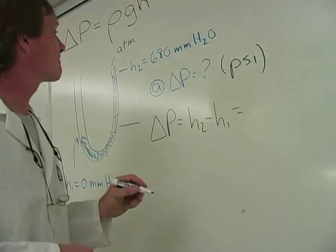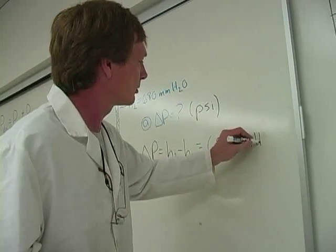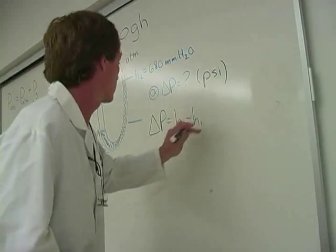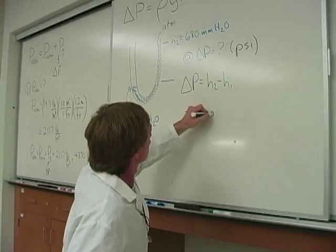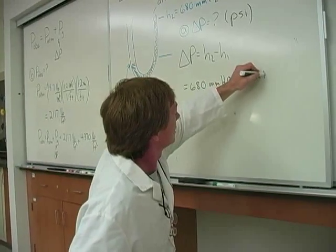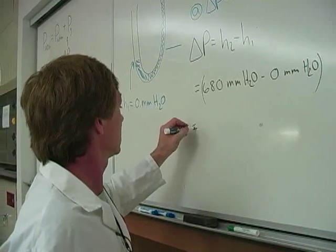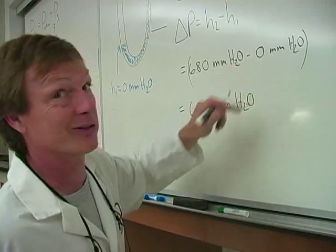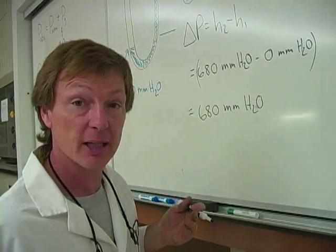And that's going to be 680 millimeters of water. Better start on the line. That's going to be equal to 680 millimeters of water minus 0 millimeters of water. Now, I could get the answer in millimeters of water - it would be 680 millimeters H2O because I picked 0. But I want it in PSI. And so I look at the back of the book, and I find a conversion.